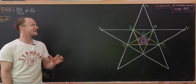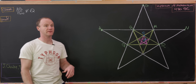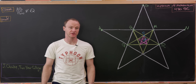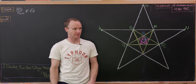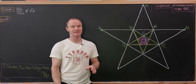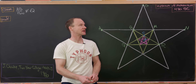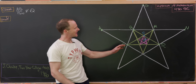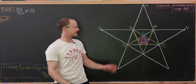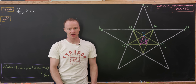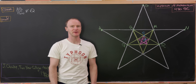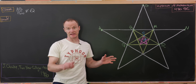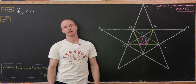Here we're going to look at a proof of the existence of irrational numbers — specifically a certain irrational number that dates way back to 470 BC. It uses a nice diagram involving embedded pentagrams, these stars nested inside of each other.